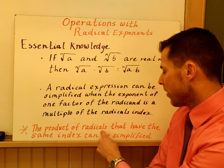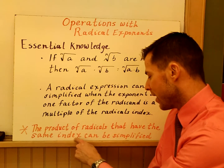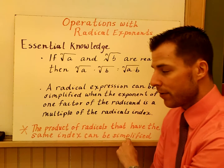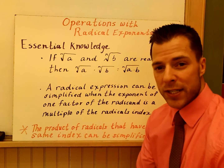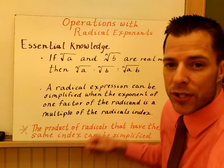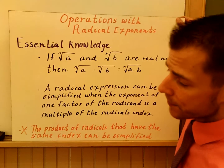Lastly, the product of radicals that have the same index can be simplified — that's important. You've seen a lot of these rules as we've gone through. So let's look at a couple of examples.